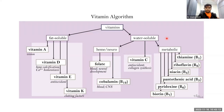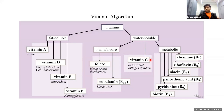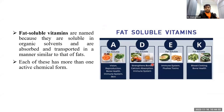Water-soluble vitamins include folate, cobalamin, vitamin C, and the B vitamins — B1, B2, B3, B5, B6, and B7. The B vitamins are mainly involved in metabolic functions, while folate and B12 are mainly involved in blood and neurological functioning. Vitamin C acts as an antioxidant and is involved in collagen synthesis, keeping our skin healthy.